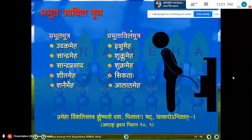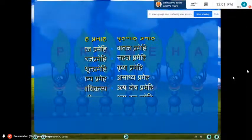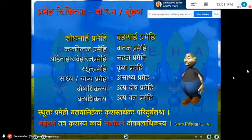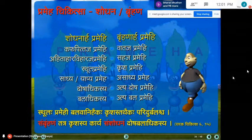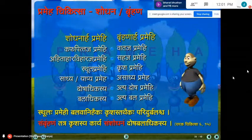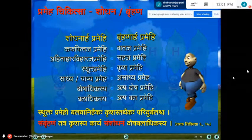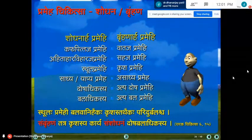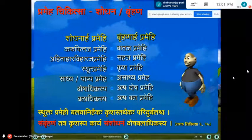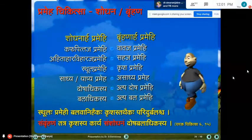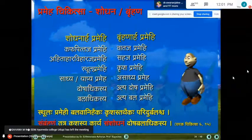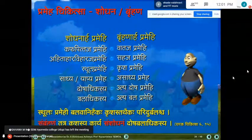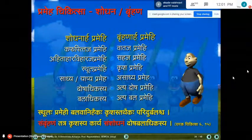Prabhuta and avila mutra are the characteristic features, but avila mutra may not be present in all varieties. This is just an introduction to the subject of prameha — to brush up the memory so that describing the treatment may be easier. Some points related to prameha have been discussed and now we move on to the chikitsa (treatment).